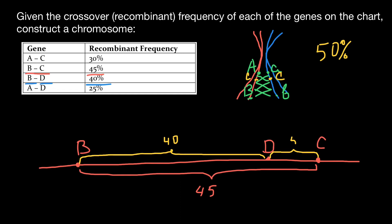So next would be 30% frequency of the crossing over between gene A and C. Can we put gene A somewhere here? That means to this 45% we have to add another 30. 45 plus 30 would be 75. Again, we cannot go over 50. That means that we have to put gene A in this direction.